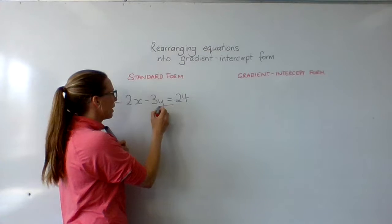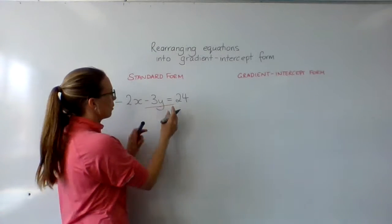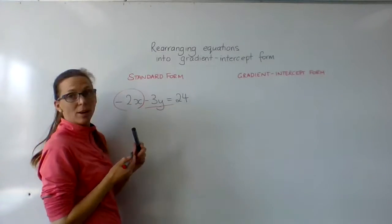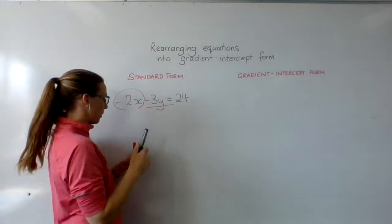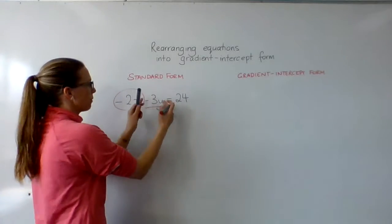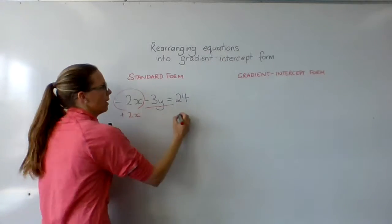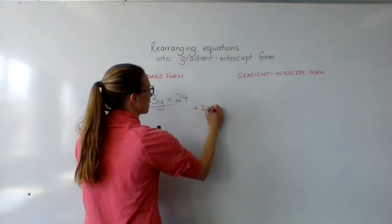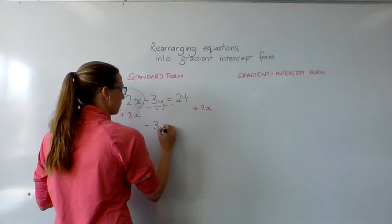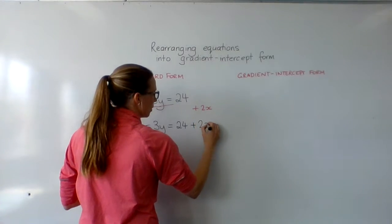Y is joined up at the moment being multiplied by negative 3. So our first step, we'll keep them together and we'll try and move our -2x. So instead of -3y taking 2x, we're going to add 2x to this side, which means we have to add 2x to this side, which leaves us with -3y = 24 + 2x.